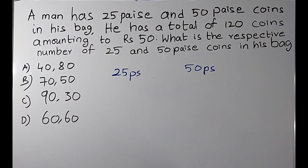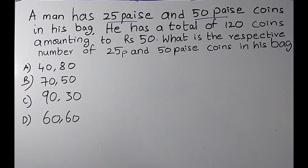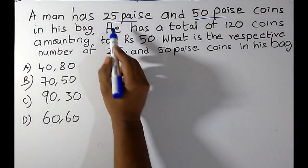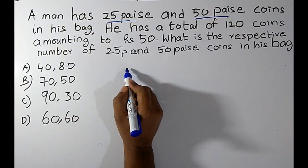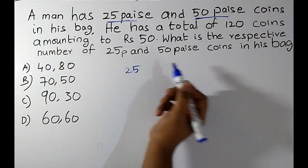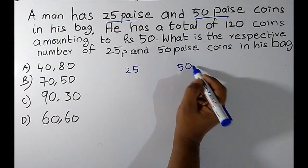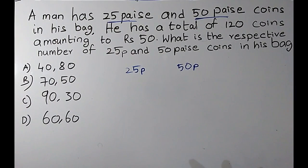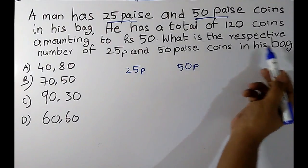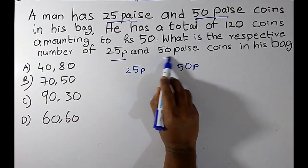Hi friends, welcome to Sunil Engineering Academy. This is Bharat. We are in continuation of ratios and proportions, Class 3. Today's question: a man has 25 paise and 50 paise coins in his bag. He has a total of 120 coins amounting to rupees 50. What is the respective number of 25 paise and 50 paise coins in his bag?